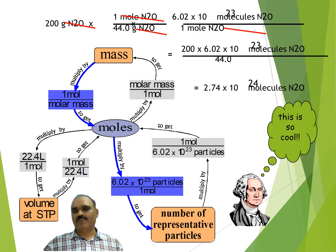What remains is Avogadro's number into 200. By solving it, by working out on it, you will get 2.74 x 10^24 molecules of N2O.